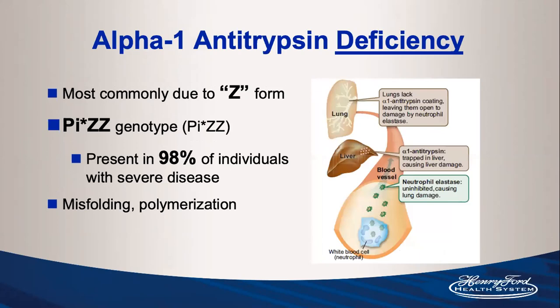The most common abnormal gene is the Z form — these patients have the PI*ZZ genotype, present in 98% of people with severe alpha-1 antitrypsin disease. The abnormal protein misfolds and polymerizes, getting trapped in the liver and causing local damage because it can't be secreted into the bloodstream. This creates a deficiency in the lung, leading to unchecked neutrophil elastase causing emphysema, and even what little protein is secreted tends to be dysfunctional.